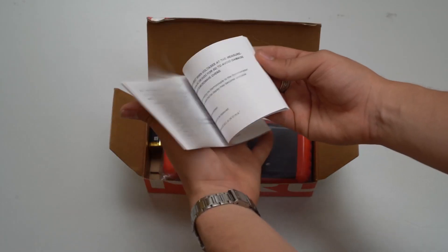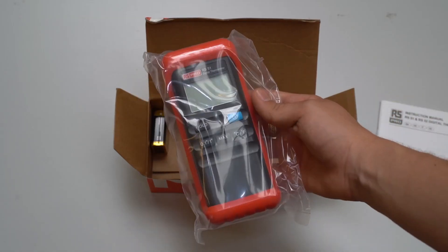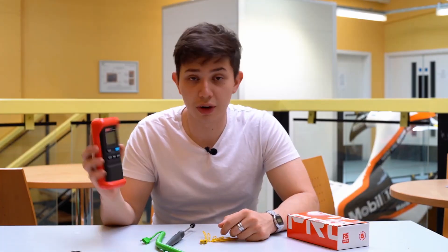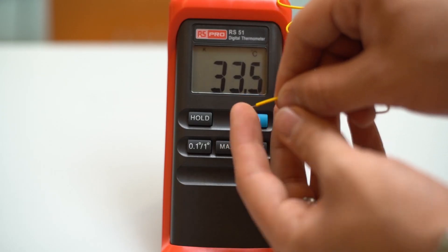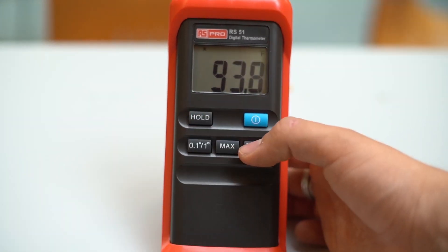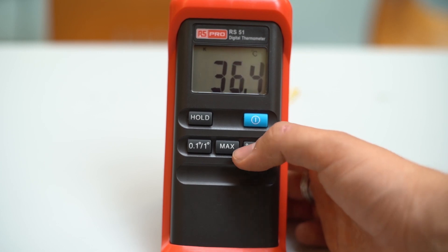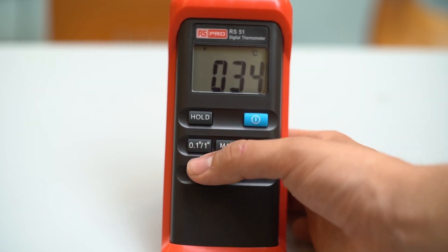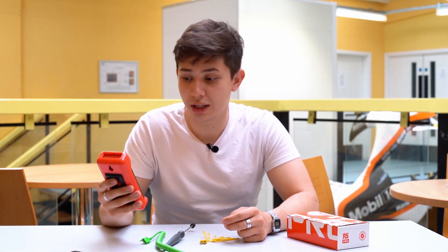Inside the box you get the following components. The thermometer itself, which has many different functions such as a hold function which freezes any value that you get. This is quite useful if you have a reading that may disappear quickly or you have a very high reading that you want to monitor. It also has degrees Celsius and degrees Fahrenheit options, significant figure options, and a max button which displays the maximum reading that was found in that reading session.